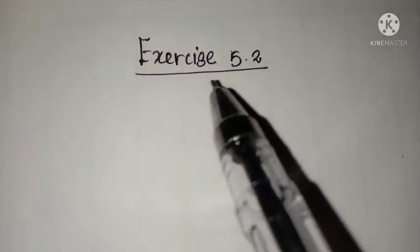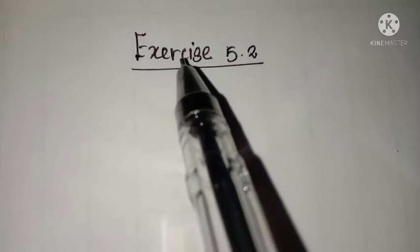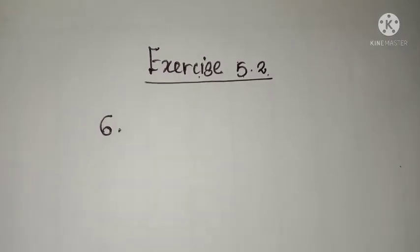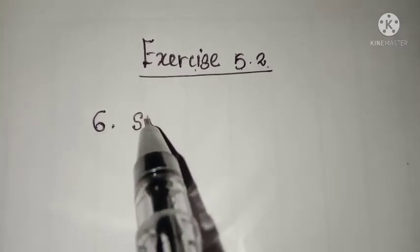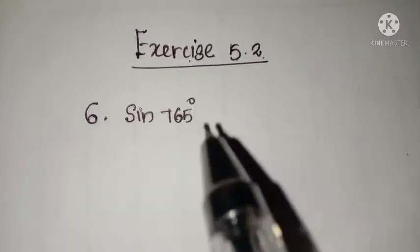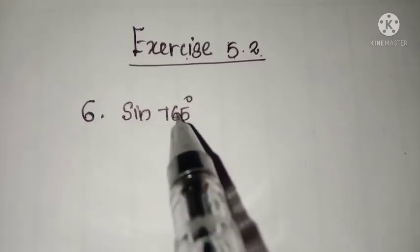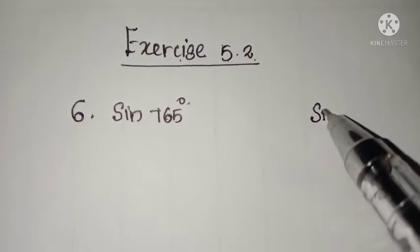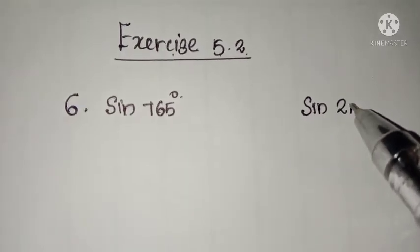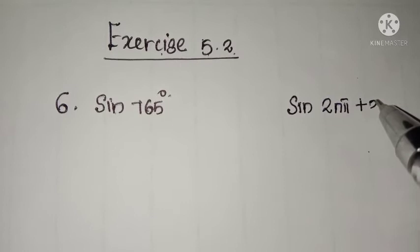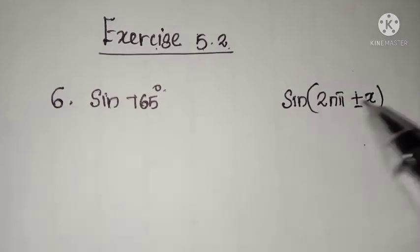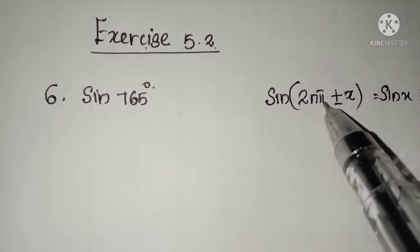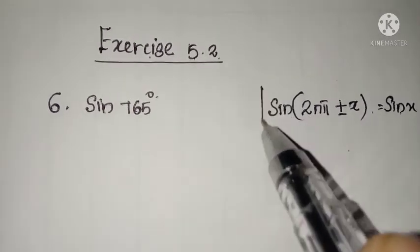We are going to discuss Exercise 5.2, question number 6 onwards. Question number 6 is sin(765°). We want to find the value of sin(765°). To find this value, use the result: sin(2nπ + x) = sin(x). That is, after 2π rotation the sine value repeats.